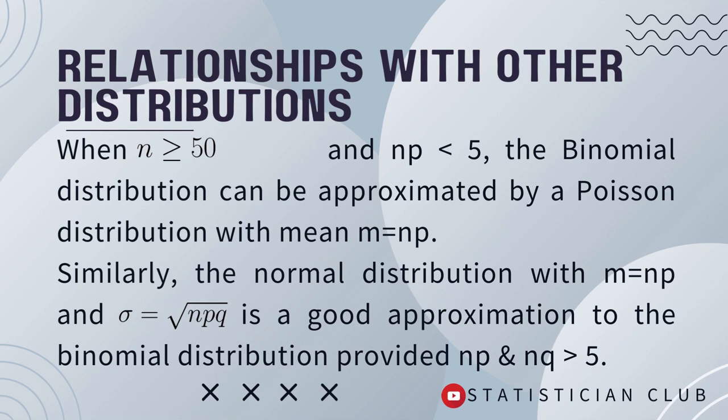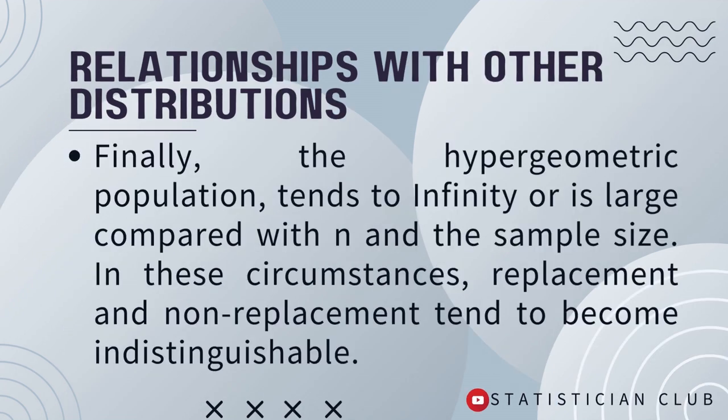Here, q is the probability of failure and p is the probability of success. When both np and nq are greater than 5, the binomial distribution approaches the normal distribution.